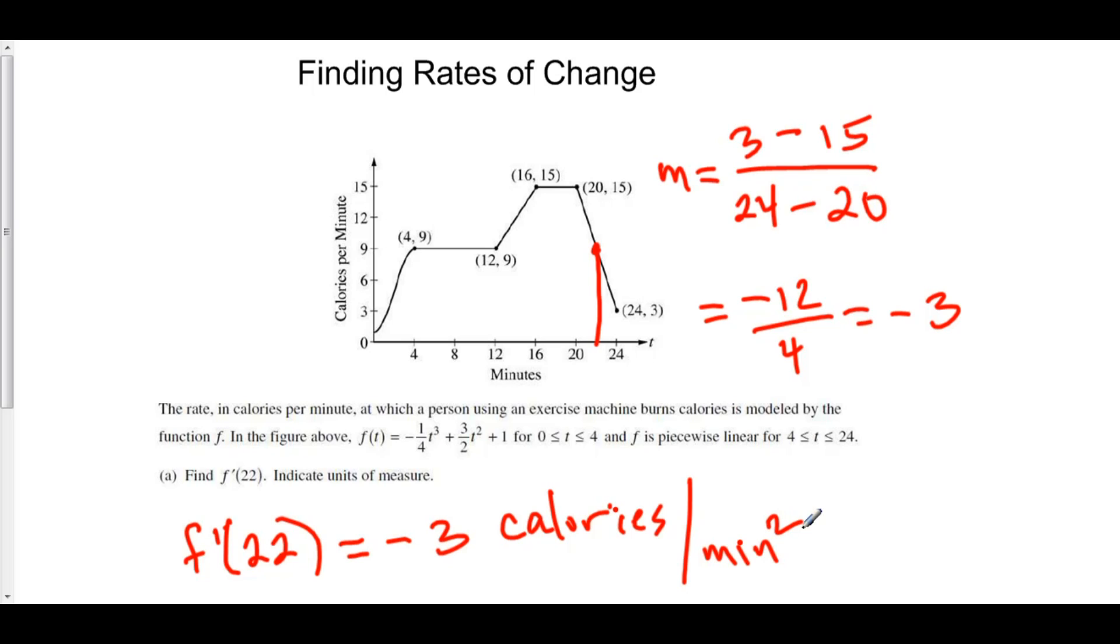This is the rate of change of f. So we already started off with a rate of change in calories per minute. f was already a rate of change. Now, the rate of change of the rate of change gives you the number of calories per minute you burn per minute, or calories per minute squared.